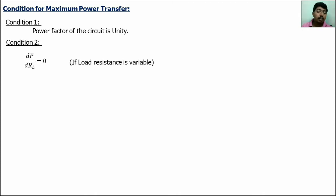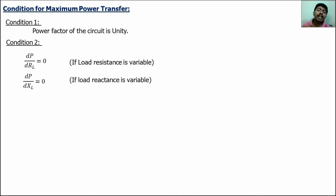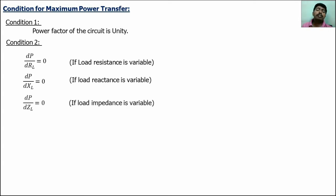The conditions for the maximum power transfer theorem: the first condition is if the power factor of the circuit is unity, the maximum power will be transferred. The second condition uses max-min concepts in mathematics — you have to differentiate the power using one of the variables and set it equal to zero. If the circuit has a resistance variable, differentiate by RL; if it has a reactance variable, differentiate by XL; if it has an impedance variable, differentiate by ZL. If both conditions are satisfied, the power transfer will be maximum.